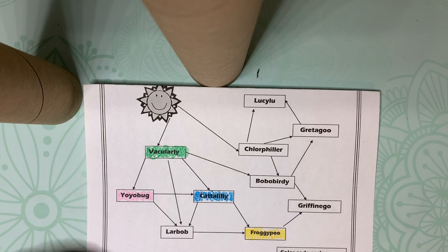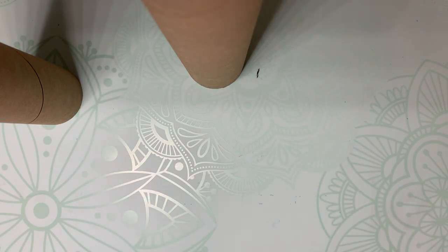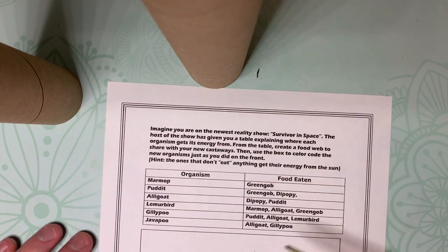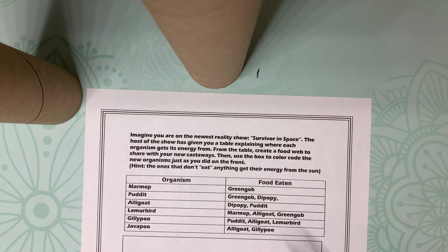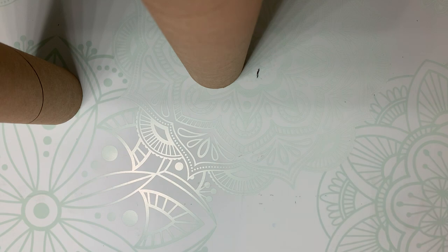The last page you have going on here is, imagine you are on the newest reality show, Survivor in Space. The host of the show is giving you a table explaining where each organism gets its energy from. From the table, create a food web to share with your new castaways. Then, use the box to color code the new organisms just as you did on the front. Hint. The ones that don't eat anything get their energy from the sun. So, it'll go through all of that with you. And then, you'll create that good little exercise for you to do today.